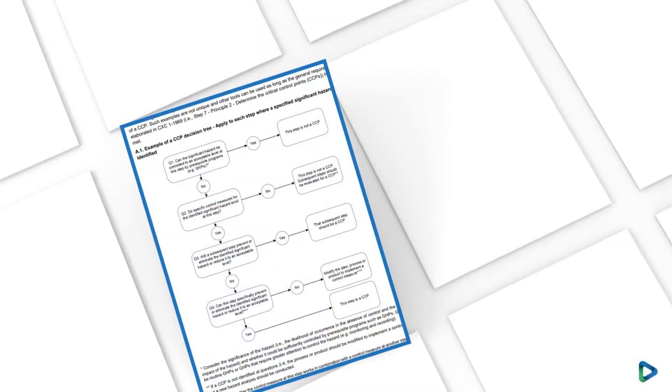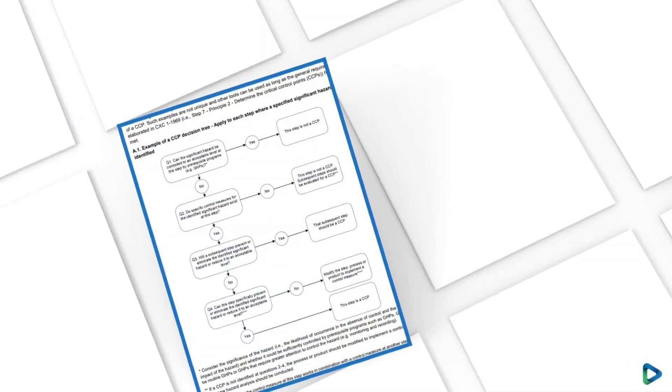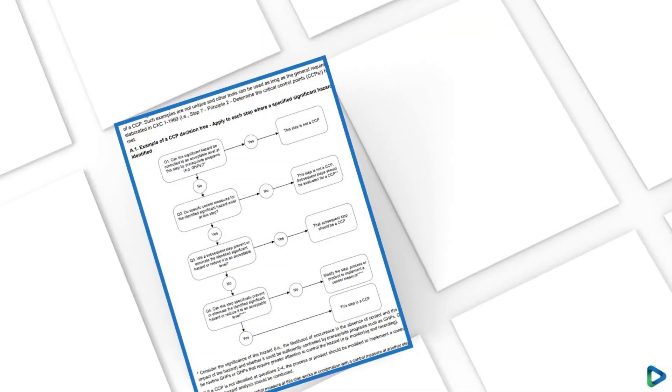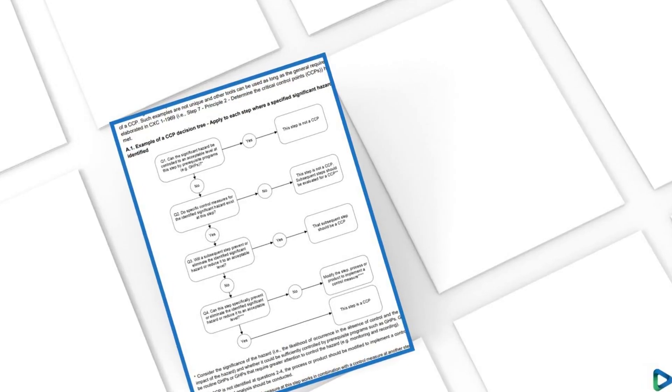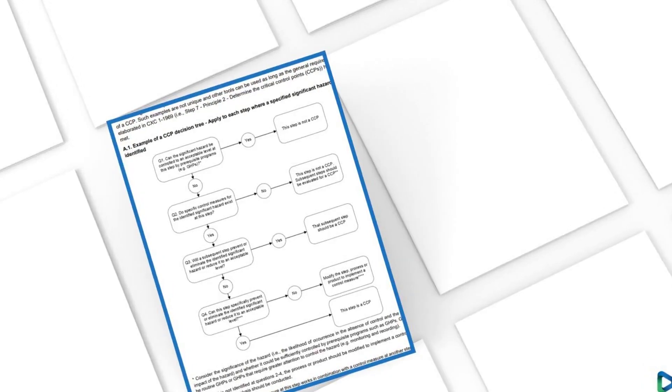The Codex CCP decision tree involves answering four questions. These questions must be answered in order, and the answer to each question will either be yes or no. There are also some provisos annotated with asterisk symbols — make sure to consider these at each step and respond where indicated. As with HACCP, you are required to document your use of the CCP decision tree.